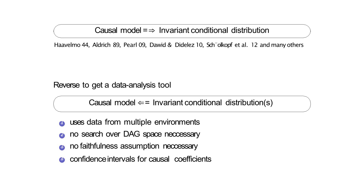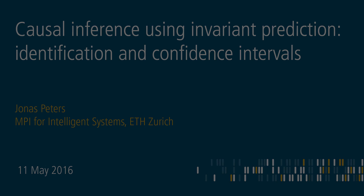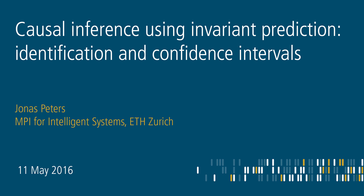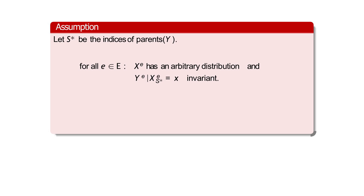In the second part we provide more details about what the algorithm is doing and what theory it's based on. I repeat the main assumption: you can think of the set S* as being the parents of Y — what Nikolai called conditional invariance. We assume that for all environments, the conditional distribution of Y given X_{S*} is invariant — always the same distribution.